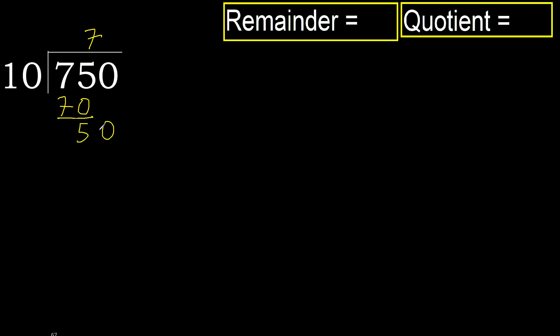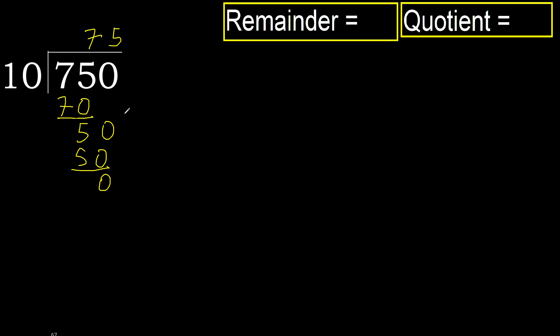Next, 50. 10 multiply by 5 is 50 — not greater, okay. Subtract: 50 minus 50 is 0. So next, there is no number, therefore finish it.